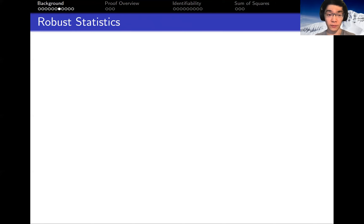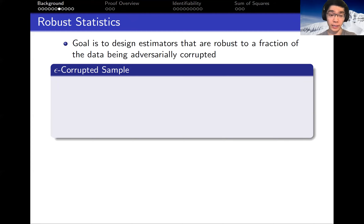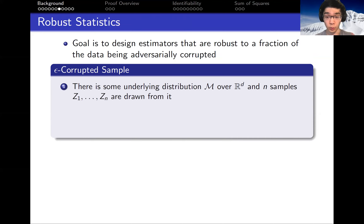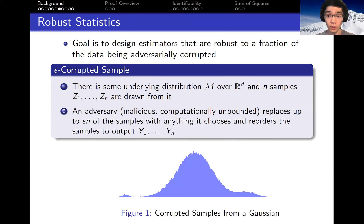This naturally segues into the field of robust statistics, where the overarching goal is to design estimators that are robust to some fraction of our data being adversarially corrupted. More formally, the important notion is that of an epsilon-corrupted sample: we have some underlying distribution m, and n samples are drawn iid from m. An adversary can do whatever they want to up to an epsilon fraction of our samples. So we see the corrupted samples, where one minus epsilon fraction are good samples and epsilon fraction can be whatever the adversary chooses. As a quick example, if our underlying distribution were a Gaussian, our epsilon-corrupted samples might look something like this.